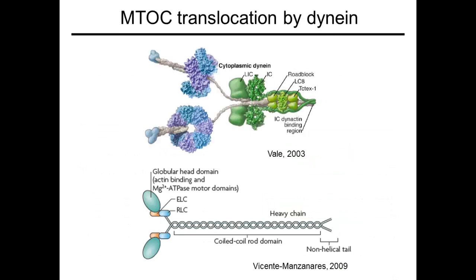How are the novel PKCs controlling the MTOC? Our study suggests that they function at least in part by coordinating the activity of two molecular motors, dynein and myosin-2. We have found that dynein, a microtubule-based motor, accumulates at the site of TCR activation.